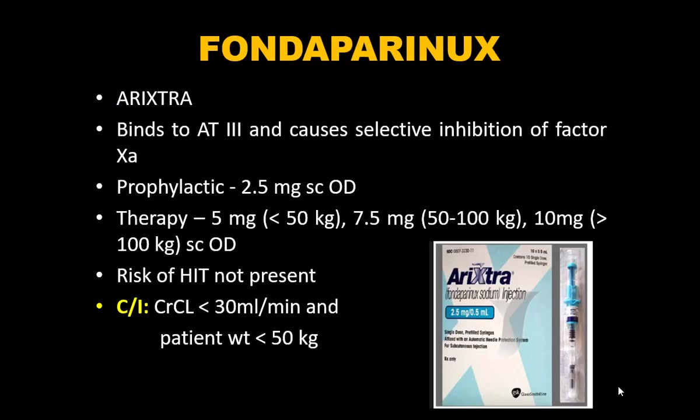Fondaparinux binds to antithrombin III causing selective factor Xa inhibition. Prophylactic dose is 2.5 mg SC OD. Therapeutic doses: 5 mg for less than 50 kg, 7.5 mg for 50–100 kg, and 10 mg for more than 100 kg — all given SC OD. Among these three drug classes, HIT risk is highest with UFH, lower with LMWH, and lowest with fondaparinux.